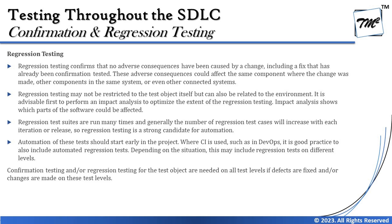Confirmation testing and regression testing are not limited to a particular level — they can be conducted in static testing, dynamic testing, and all levels like unit, integration, system, performance, and usability. Wherever a change is involved, we need to make sure that the change doesn't have a side effect on the other existing parts of the system that were working fine earlier.